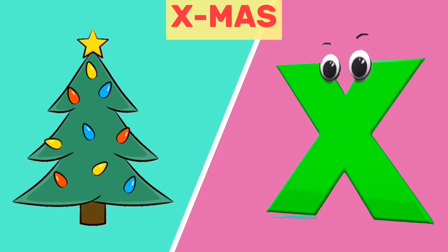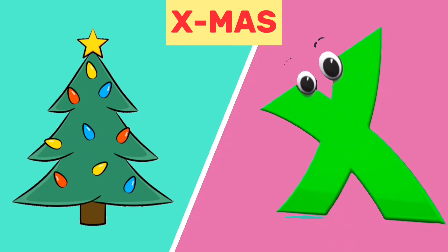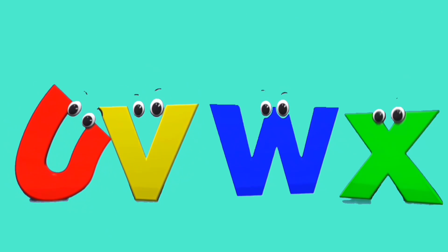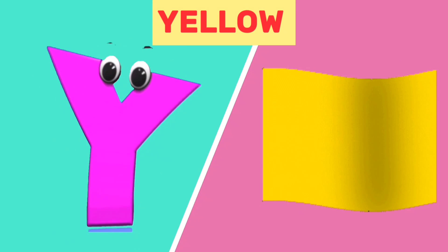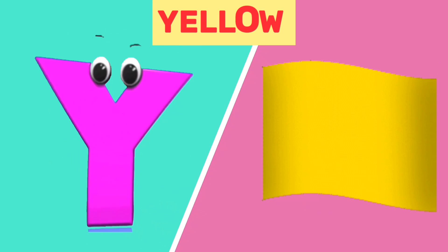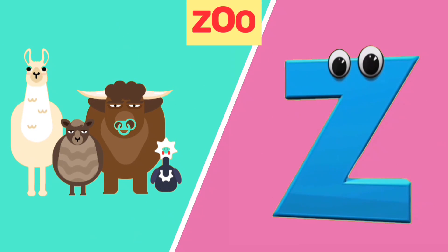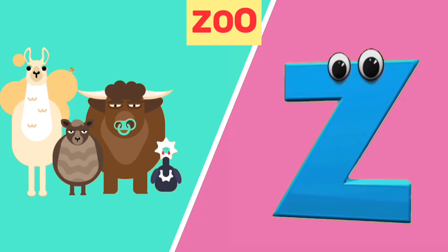X is for Xmas. X, x. Xmas. Y is for yellow. Y, y. Yellow. Z is for zoo. Z, z. Zoo.